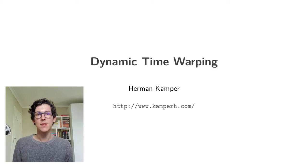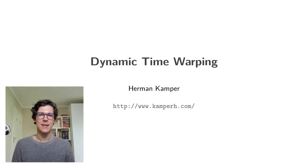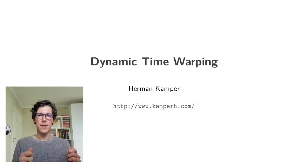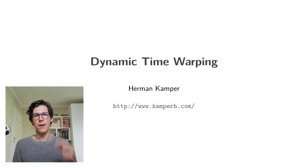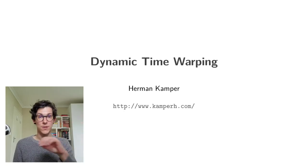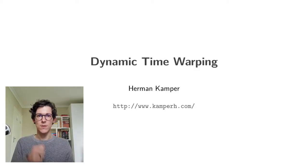Welcome everyone. In this video I'm going to look at dynamic time warping. Dynamic time warping is quite a cool technique and it basically allows you to figure out how to align two signals that might be of different durations. It tells you two things: which points on one signal correspond to points on the other signal, and how similar two signals are to one another.